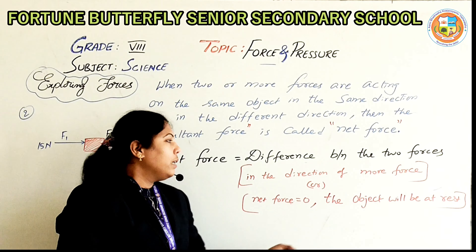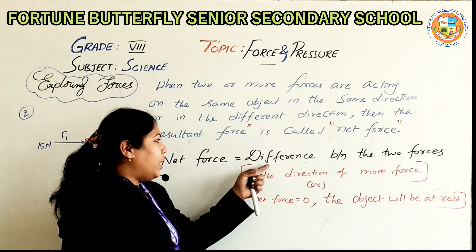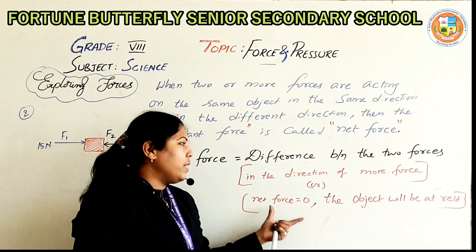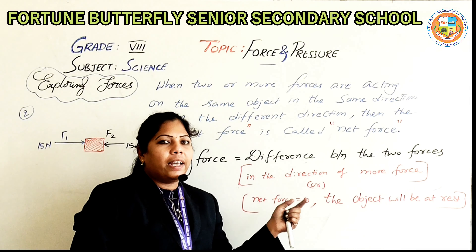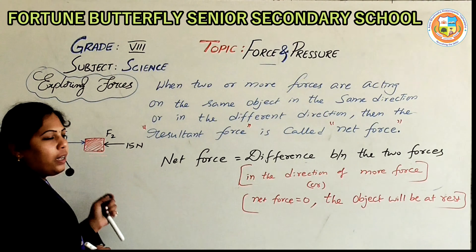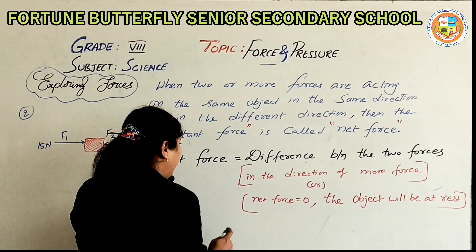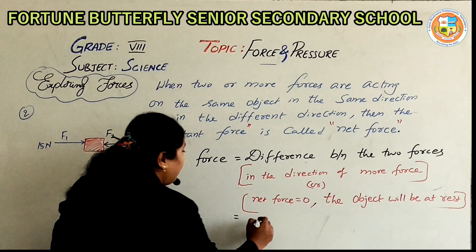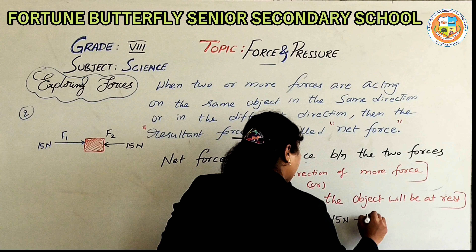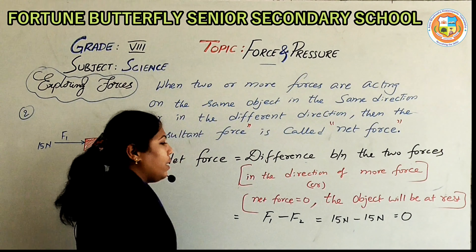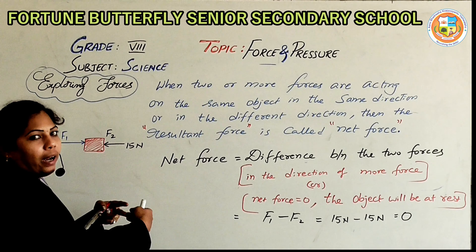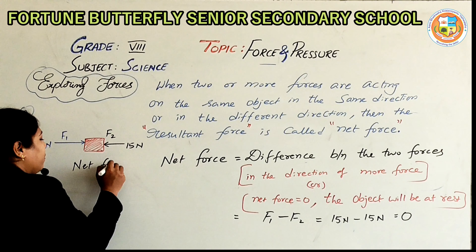If the net force is zero, the object will not accelerate. When two forces are equal and opposite, the object is at rest. For example, if F1 is 15 newtons and F2 is 15 newtons in opposite directions, the net force is 15 minus 15, which equals zero.